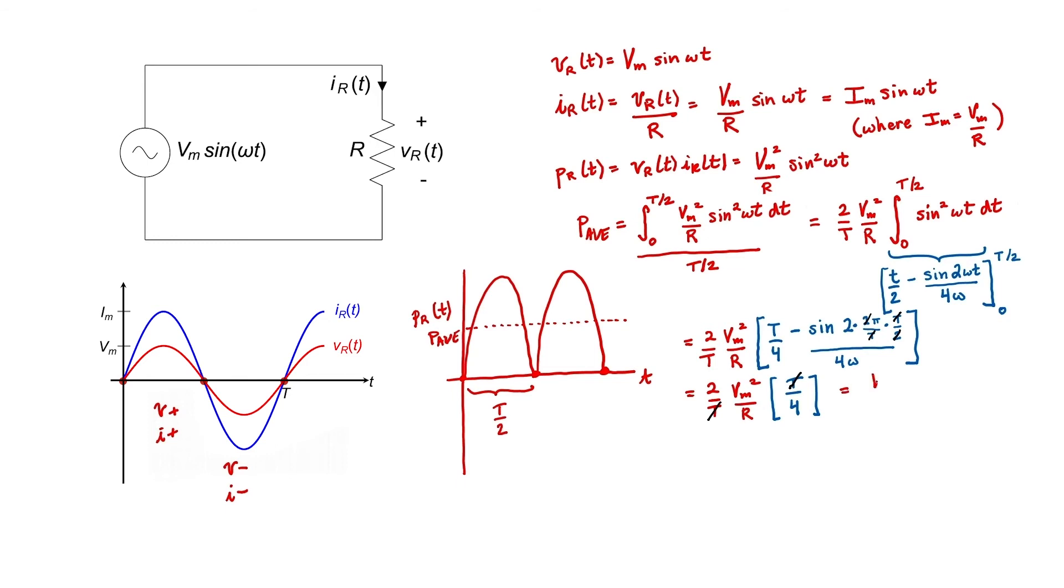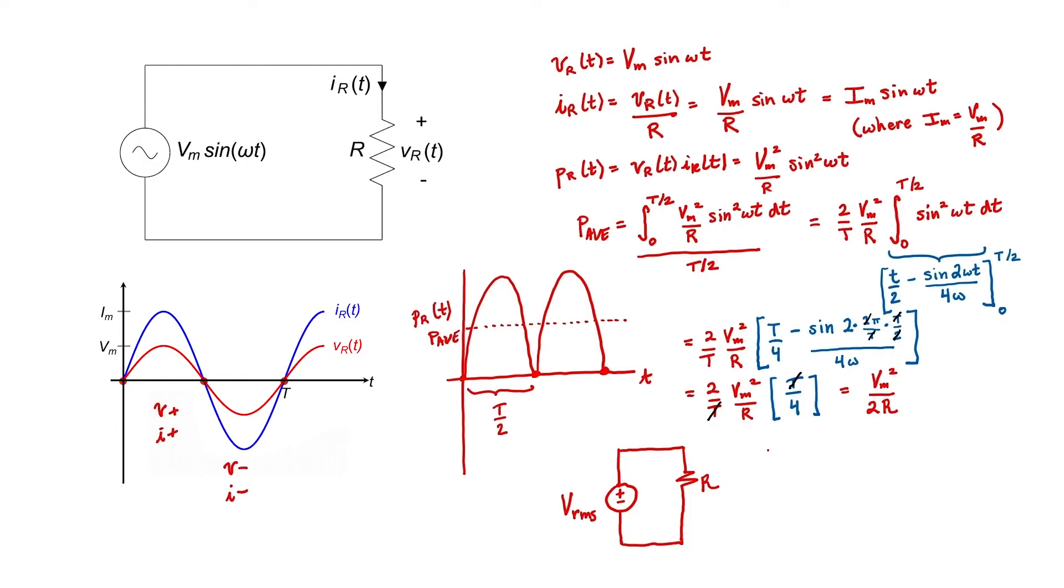Now that we know what the average power is, let's then answer the second question that I alluded to. If we were to replace that AC source by a DC voltage source, what voltage would it have to have in order to give the same average power? I've labeled that voltage Vrms, because it turns out that the voltage which answers the question is the root mean square of the time varying voltage.